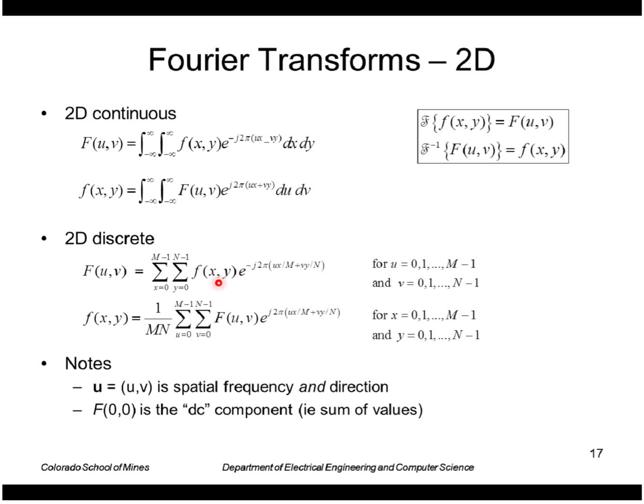Then the discrete version we use the summation instead of the integrals. So here now we have two frequency components, u and v. So we can think of this as a vector, has both spatial frequency and direction. And again, the point at u equals zero, v equals zero is just the sum of all the values.